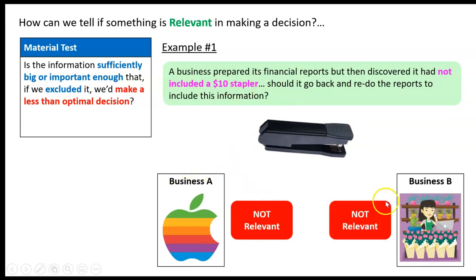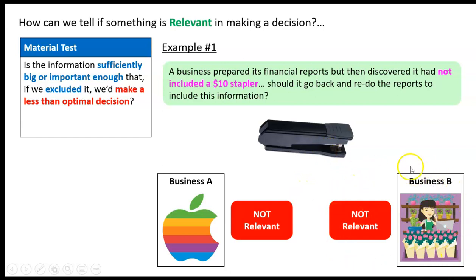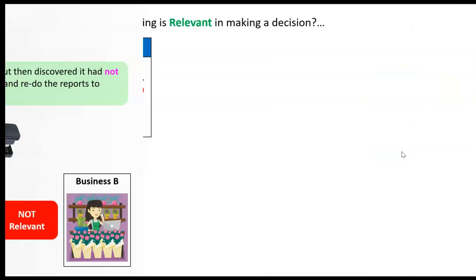Business B — a little florist business in your suburb or town, not a big business at all — same thing. It shouldn't have been excluded from the reports, absolutely. But we're saying that because it wasn't included, we can still make informed decisions about this business without considering this piece of financial information about the stapler. So, it's not relevant.